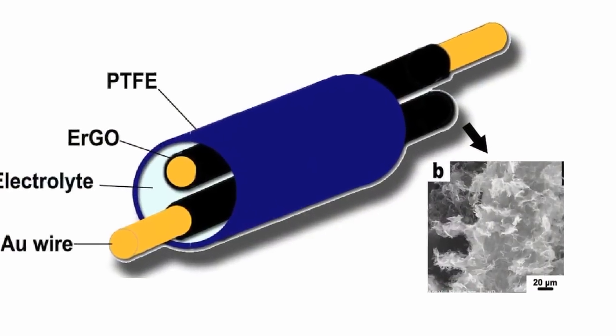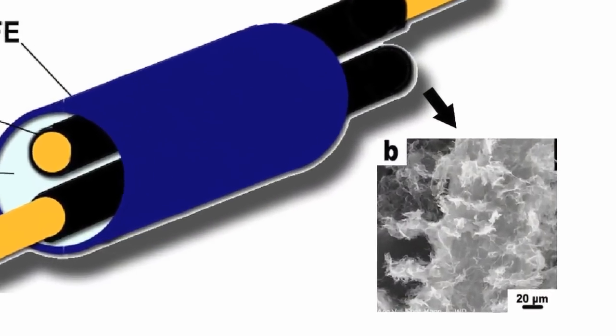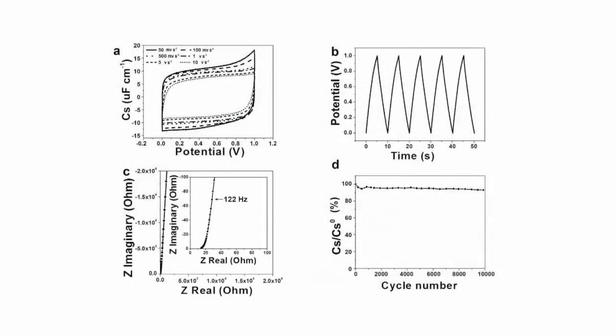We developed a prototype of fiber-shaped solid electrochemical capacitors by using electrochemically reduced graphene oxide as the electrode material. The electrochemical capacitors showed high specific capacitance and rate capability, good flexibility, and excellent electrochemical stability.